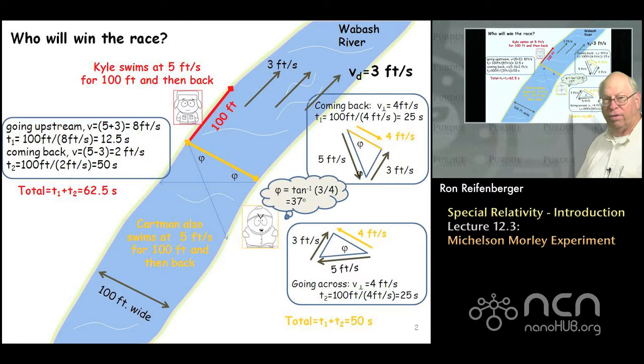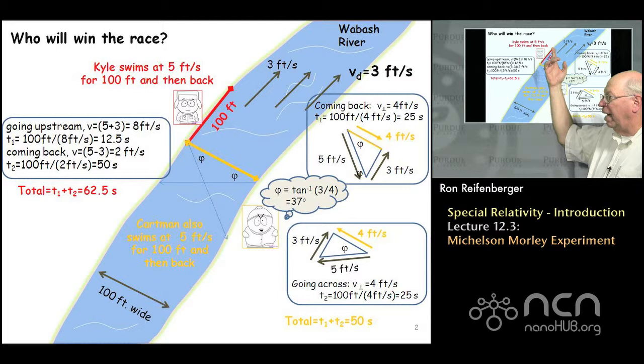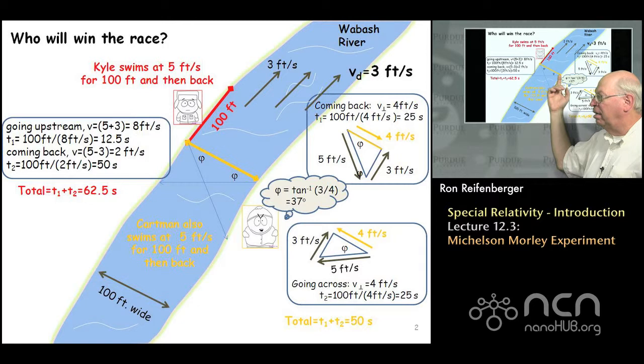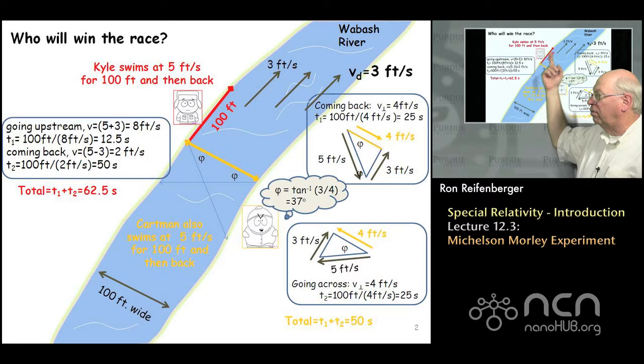If the drift velocity of the river were zero, the time it would take for the swimmer to go out 100 feet and back again would be precisely the same as the time it would take for the other swimmer to cross the river and swim back. But as you turn on the drift velocity, it's going to take longer for the upstream swimmer to complete 100 feet compared to the cross-river swimmer.